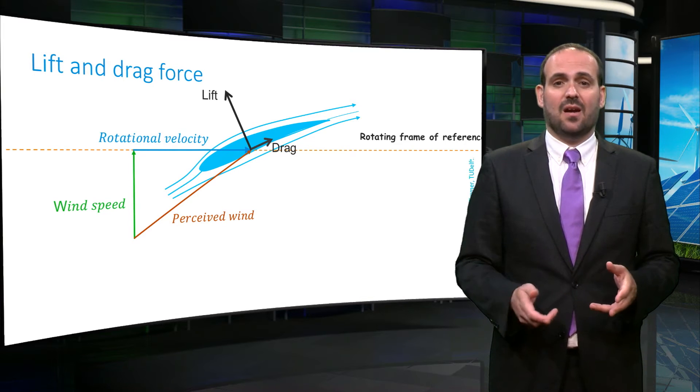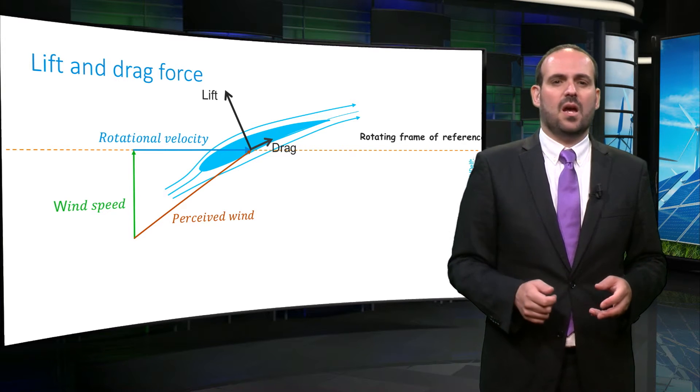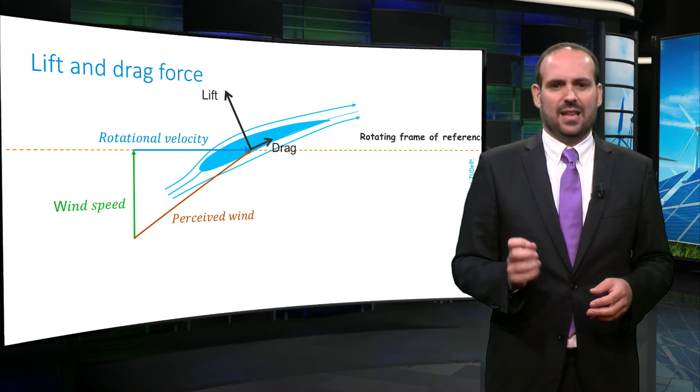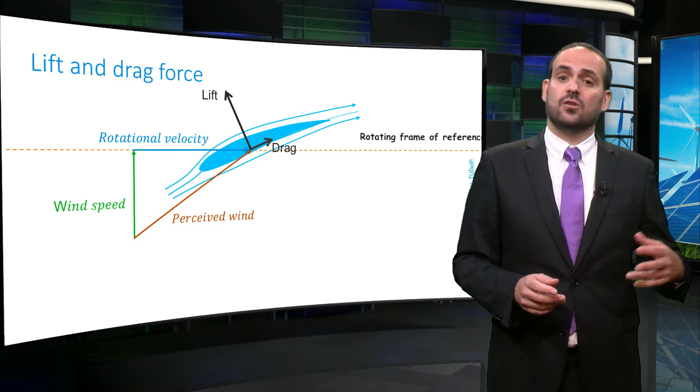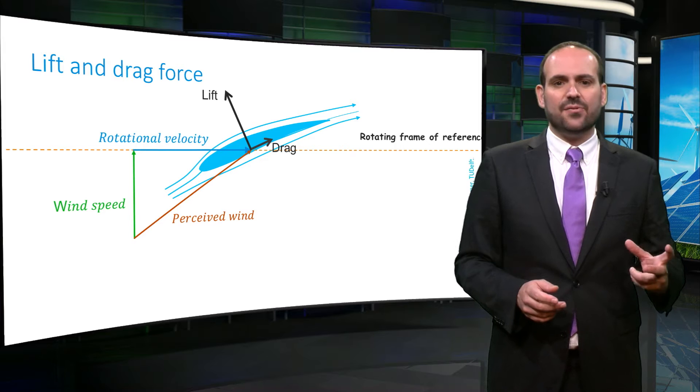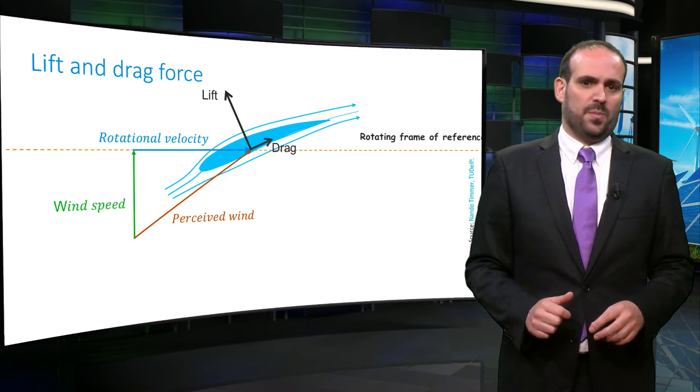An airfoil of a wind turbine blade is designed to create one special type of aerodynamic force, lift, while minimizing the other aerodynamic force, drag.